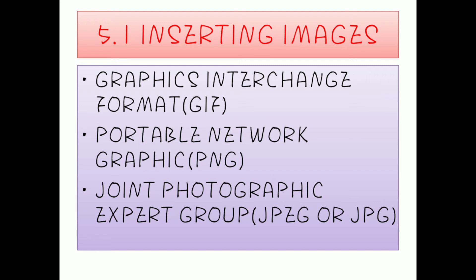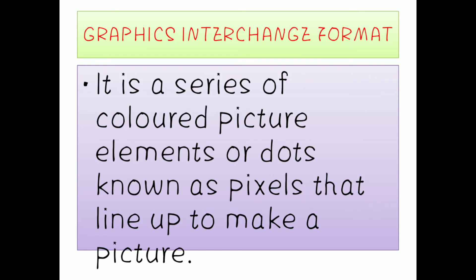Now let us individually look at the meaning of each format. Graphics Interchange Format is basically a series of picture elements. These are colored dots called pixels which make up a line in order to create a picture. So GIF is essentially a series of colored picture elements or dots called pixels that together make up a picture.